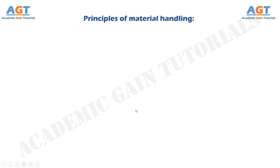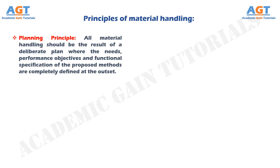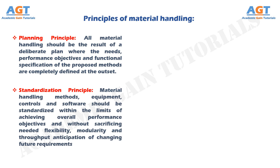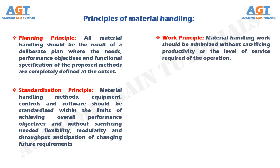Let's look at the principles followed in material handling. The planning principle: all material handling should be the result of a deliberate plan where the needs, performance objectives and functional specification of the proposed methods are completely defined at the outset. The standardization principle: material handling methods, equipment, controls and software should be standardized within the limits of achieving overall performance objectives and without sacrificing needed flexibility, modularity and throughput in anticipation of changing future requirements. The work principle: material handling work should be minimized without sacrificing productivity or the level of service required of the operation.